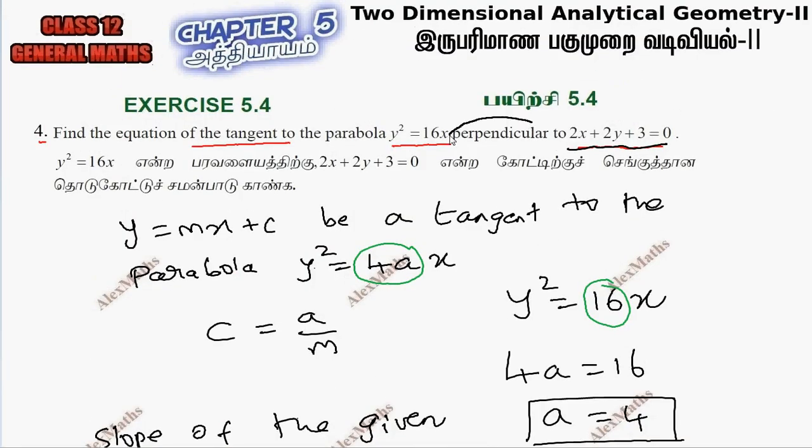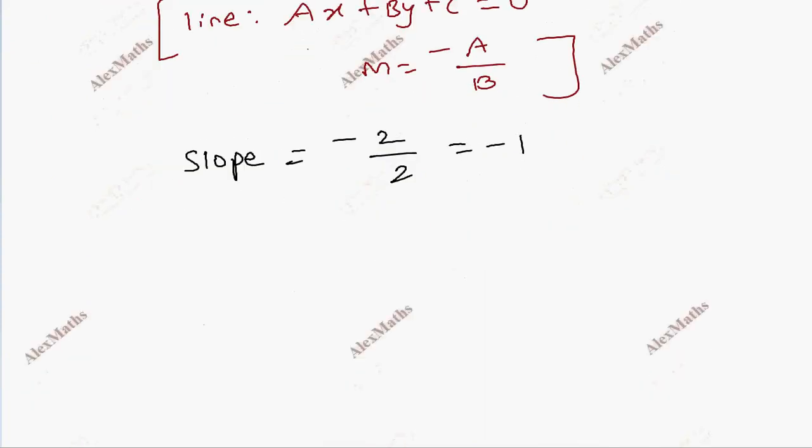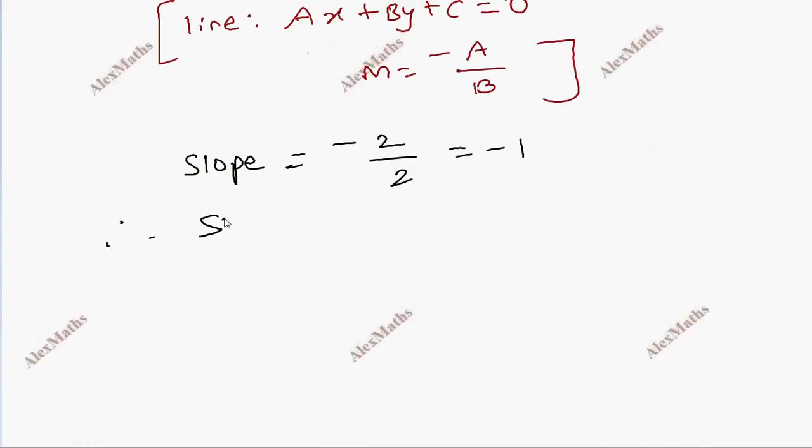If lines are perpendicular, then the tangent slope is the negative reciprocal. Therefore, slope of tangent equal to 1. So the m value is 1.